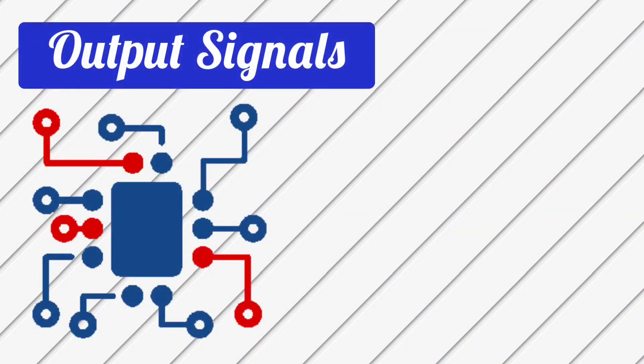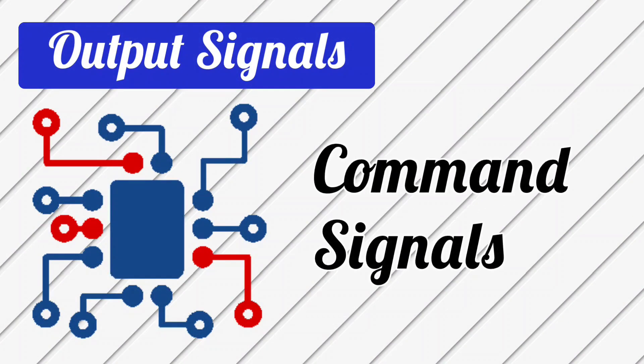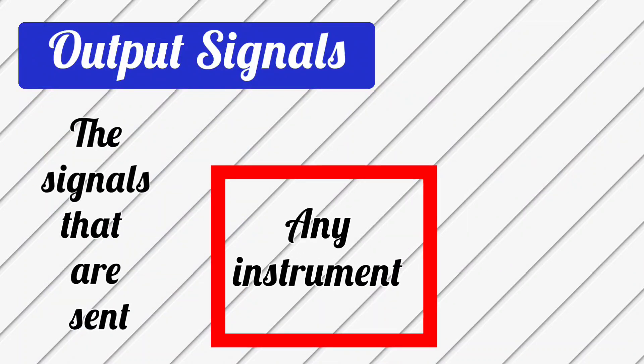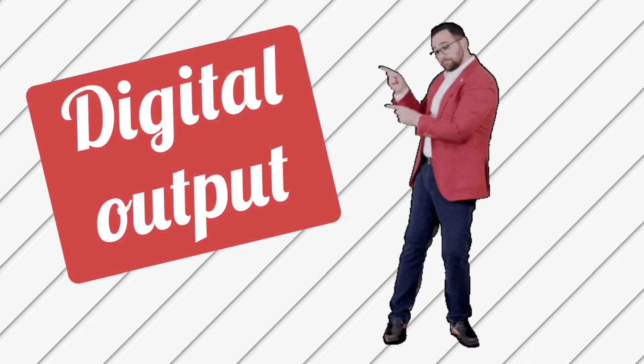Now let's talk about the output signal. Output signals are also called command signals. If you understand the output signals in easy language, the signals that are sent somewhere are called output signals. Now let's understand digital output.